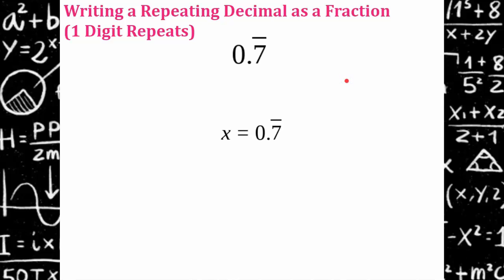So I'm going to let x equals 0.7 repeating. Then I'm going to write my second equation, multiplying both sides by 10 because one digit repeats. The 7 repeats. 10x will then equal 7.7 repeating. I will now subtract the first equation from the second, giving me 9x equals 7.